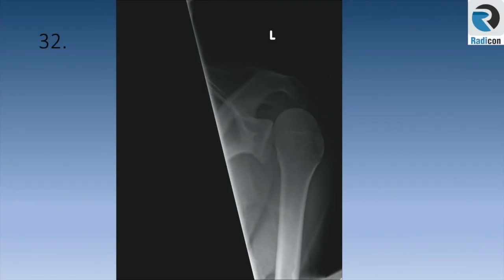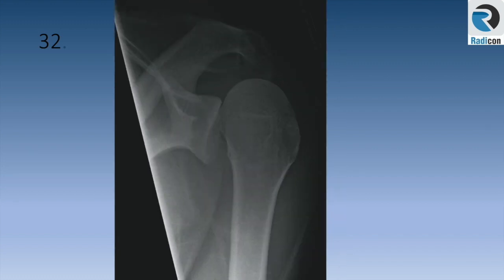Case 32. Left shoulder view. It shows loss of congruity of the left glenohumeral joint with the light bulb sign of the humeral head, indicating posterior dislocation of the left shoulder joint. This is another exam favourite for rapid reporting as well as the viva.